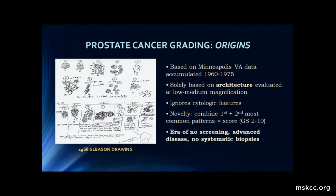Just to take you back to origins: this is a copy of Gleason's original hand-drawn diagram that he provided to Dr. Reuter when he visited Memorial in the 80s. What was fairly amazing about this is he was pretty on target in terms of taking a system for prostate cancer grading that's solely based on architecture. It's the only system that has remained essentially in its essence intact across all cancers in all organs. He also had the novelty to look at clinical outcome and say that a first-plus-second-most-common score actually mattered — it wasn't just the most common.